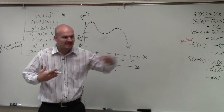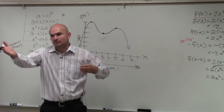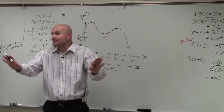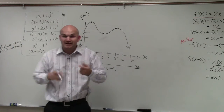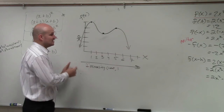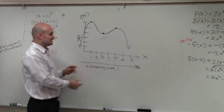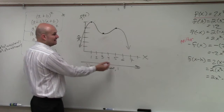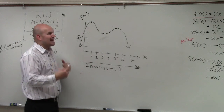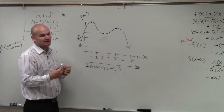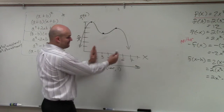Remember how domain was only x, right? We only care about x. Just know from the values of x going left and right. Same thing with increasing and decreasing — what x intervals is the graph increasing? Negative infinity to 1. What other x intervals is it increasing? From 3 to 5.